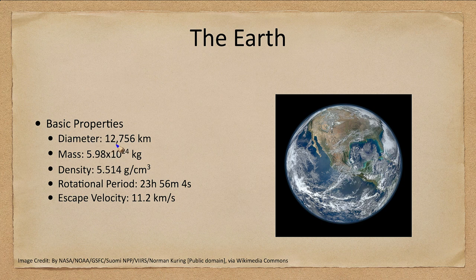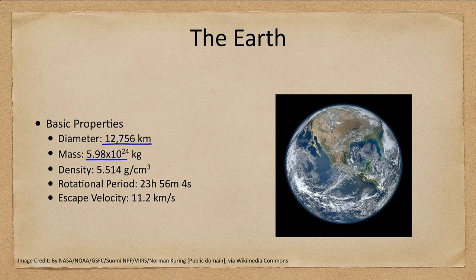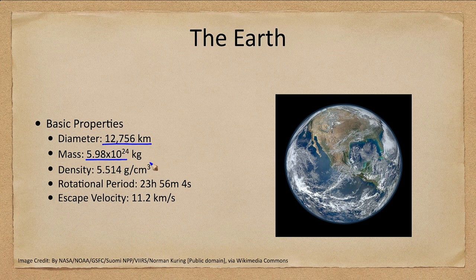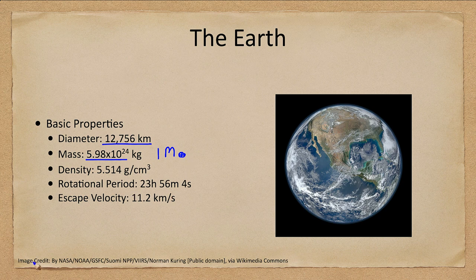We're going to look at that in more detail over the coming slides and lectures. Now, basic properties are that the Earth is about 12,756 kilometers in diameter. It has a mass of nearly 6 times 10 to the 24th kilograms.